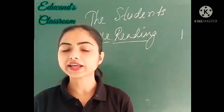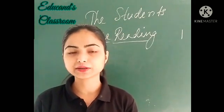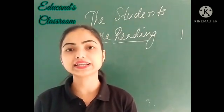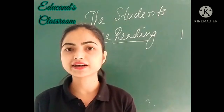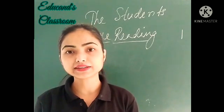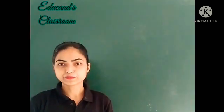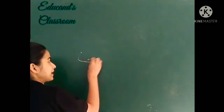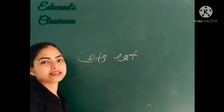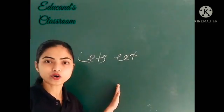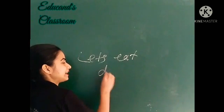Abhi, jho next type ke verb hai, woh hai transitive and intransitive verb. Transitive verb hooté hai jho object ke saath accompany hooté. Intransitive verb hai jhaa peh koi object ki zharurat nahi hai. Toh let's suppose mein eck sentence likhta hai: 'Let's eat.' Yeh eck complete sentence hai. Aur agar mein likhta hai: 'Let's eat dinner.'